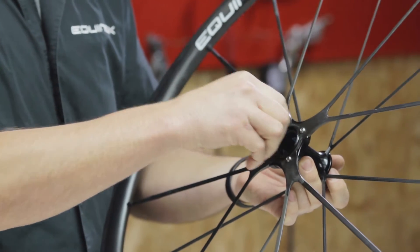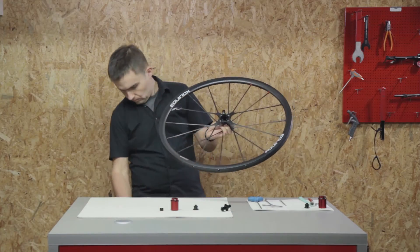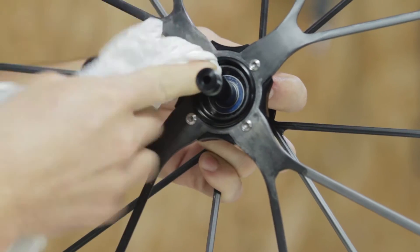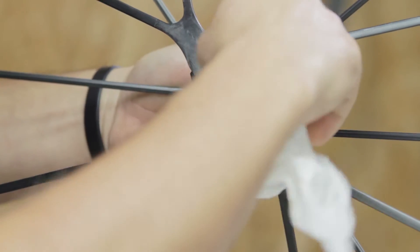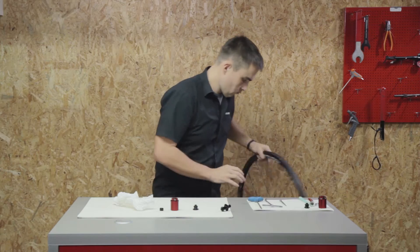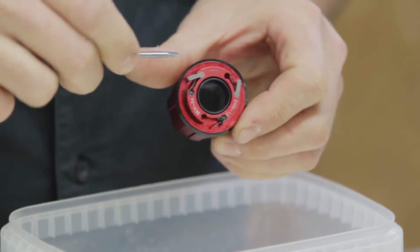Including washer, clean the bearings. Now disassemble and clean every single part of the cassette body.